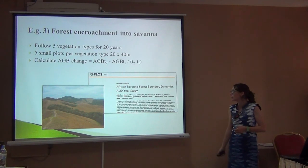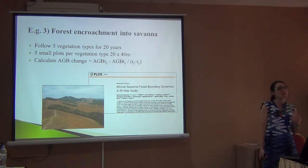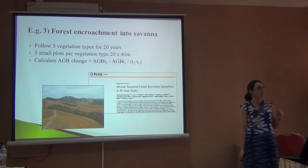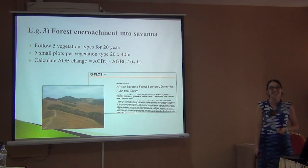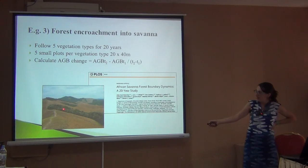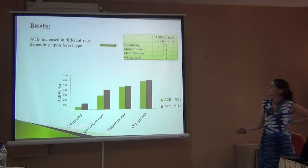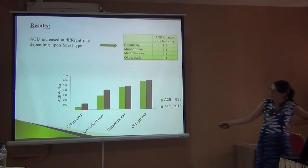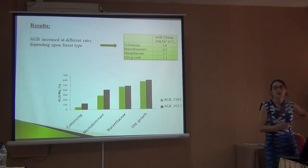Another example from Gabon looks at savannah-forest succession. In West Africa the problem is savannah expanding into forest due to more fires, but in Gabon the opposite is happening — forest is eating into savannah. Seeds fall into the savannah and over time it becomes forest. The study tracked how fast different forest types grow: from savannah at zero, to colonizing with few trees, to monodominant species, to marantaceae understory, to old-growth forest for comparison. Over a 20-year period all types accumulated more biomass, but the rate differed — young forests at 3.8 megagrams per year.